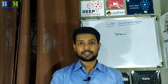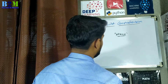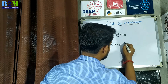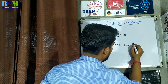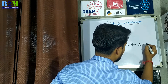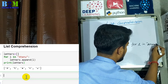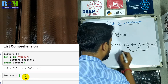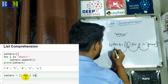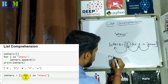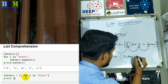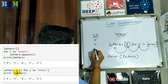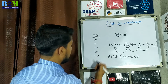Now we'll see the same example using list comprehension. We already have the string — my name, 'Atanu'. So here, letters is a list defined with square brackets: pass L for L in the string. Each letter of the string comes into L, and that L is stored into the list 'letters'. If you print letters, the output will be the same as before: A, T, A, N, U.